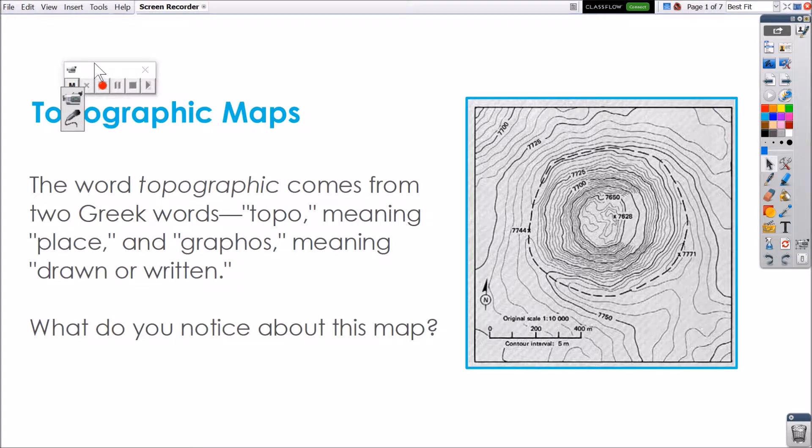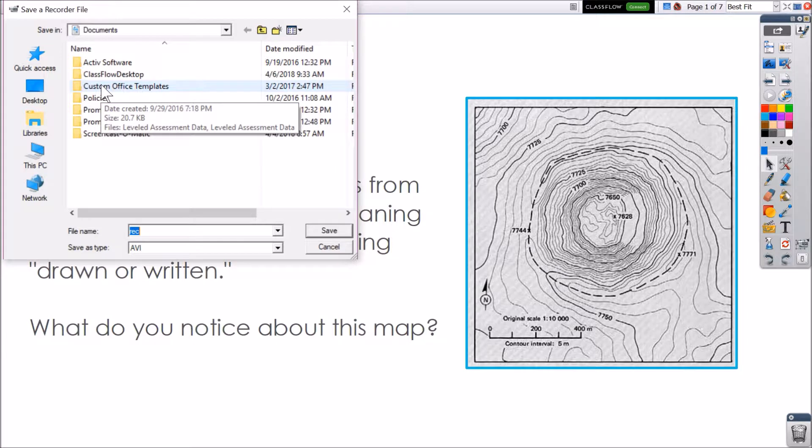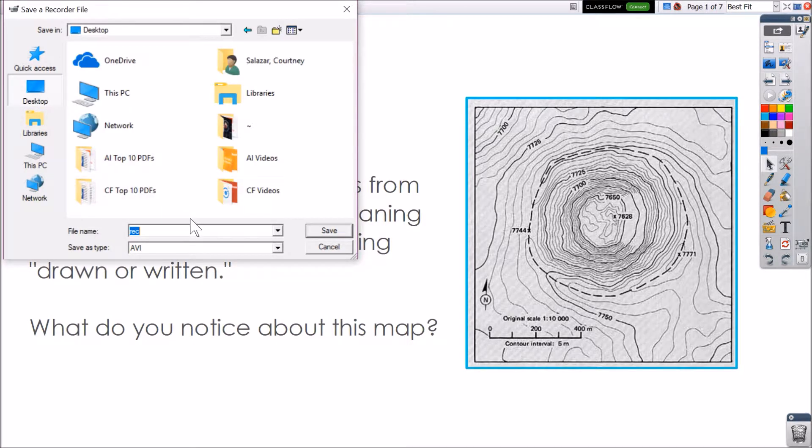When you're ready to begin, click record. The Save a Recorder file dialog box opens. Choose the location, give your file a name, and click Save.